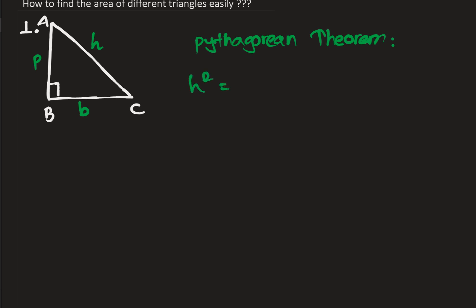Hypotenuse square is always equal to the square of the base plus square of perpendicular. We must know this theorem in order to solve future problems regarding different kinds of triangles where we must find the height.